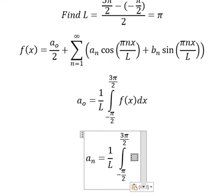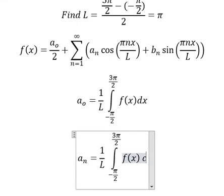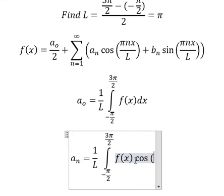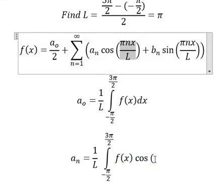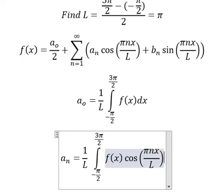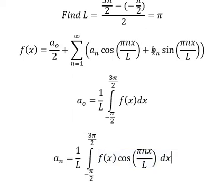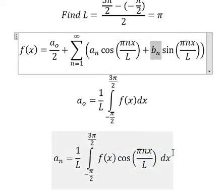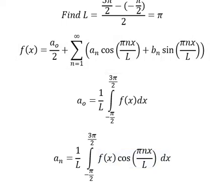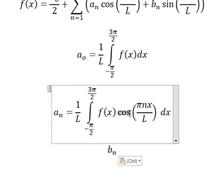So we have f of x multiplied by cosine of Bn x over L about Bn x over L. We do the same but we change this one into sine.